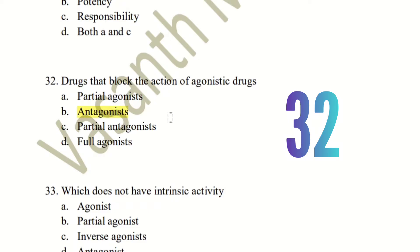An antagonist blocks agonist actions. A full agonist contributes to a full result of activity. A partial agonist means the agonist activity is not full, but we can still use the actual agonist. However, an antagonist obstructs agonist activity entirely. That is why the antagonist drug blocks agonist activity.